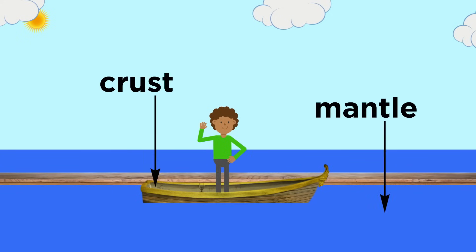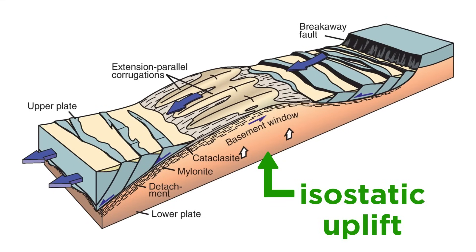Back to the geological case, the crust is analogous to the boat, and the mantle is analogous to the water, with the crust bobbing up and down in response to the thickening and thinning of the crust.